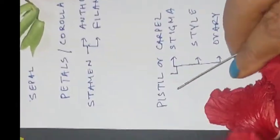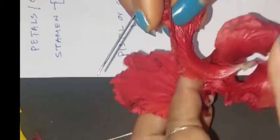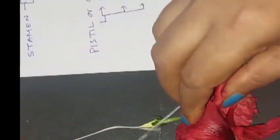This is petals which is brightly colored part of the plant to attract the insect for pollination. Petals help to attract for pollination. Let's understand the stamen.